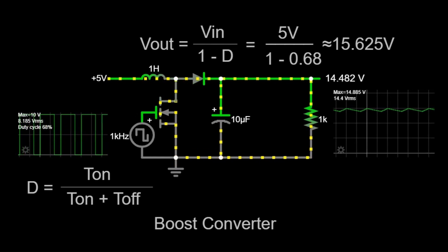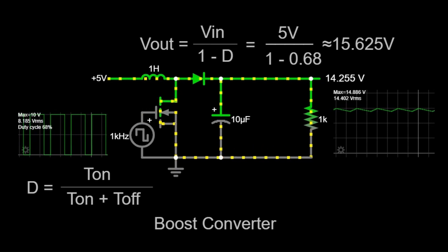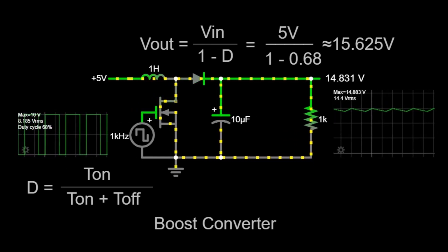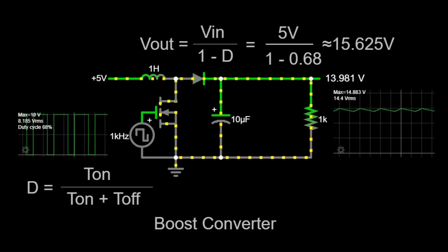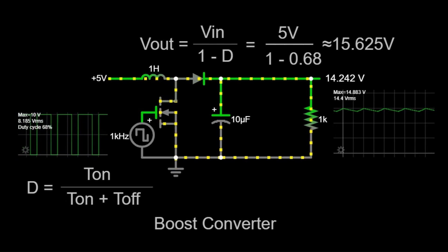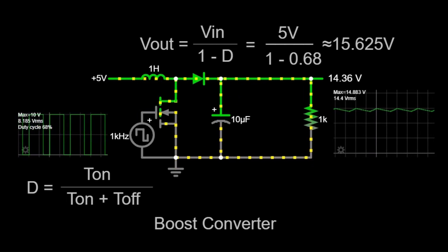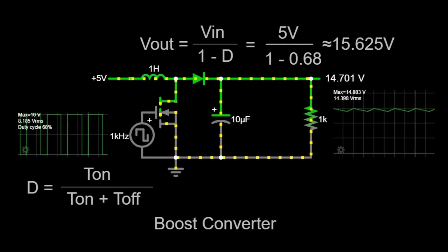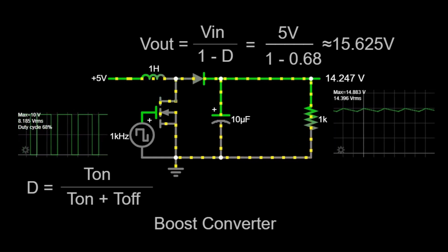In this example, if our input voltage (Vin) is 5 volts and the duty cycle (D) is 68%, we can calculate the output voltage (Vout) as follows: Vout equals 5 volts divided by 1 minus 0.68, equals approximately 15.625 volts. This calculation shows that with a duty cycle of 68%, the boost converter increases the input voltage from 5 volts to approximately 15.625 volts.